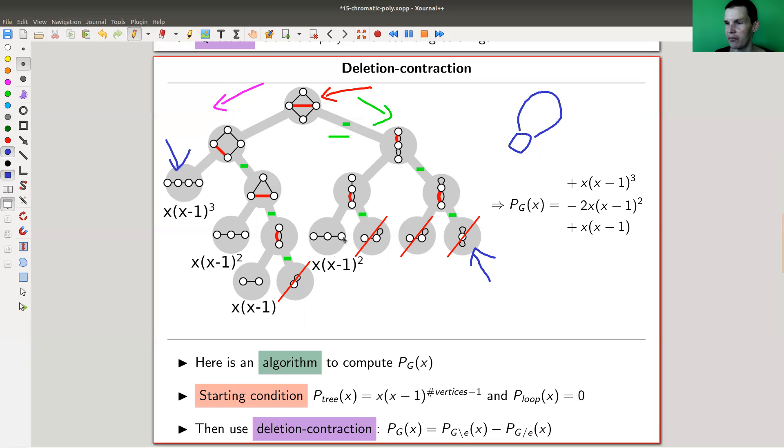And the trees, so the things you see here, they get just this polynomial associated. So you get a number of edges here, a number of vertices like this. So vertices minus one times x.